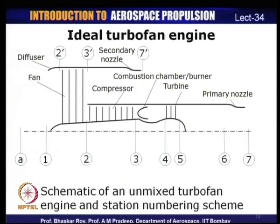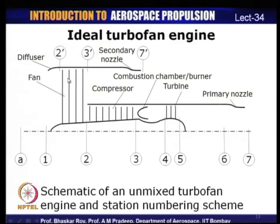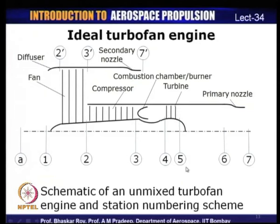This is a schematic of the turbofan engine. It consists of additional components — the fan and the bypass duct and secondary nozzle — alongside the core components identical to a turbojet: compressor, combustion chamber, turbine, and primary nozzle. For cycle analysis, symbols with a prime (2′, 3′, 7′) denote bypass duct properties: 2′ for fan inlet, 3′ for fan exit, and 7′ for secondary nozzle exit.